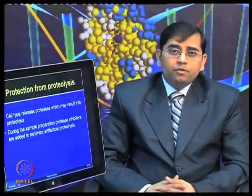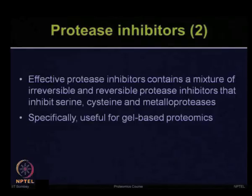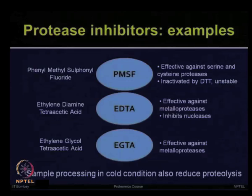During sample preparation, one can use different types of protease inhibitors to minimize artifactual proteolysis. Effective protease inhibitors contain a mixture of different types — irreversible and reversible — which inhibit serine, cysteine, and different metalloproteases. This step is more important when preparing samples for gel-based proteomic applications. For example, phenylmethylsulfonyl fluoride (PMSF) is very effective against serine and cysteine proteases, but it can be inactivated by DTT and is unstable in some conditions.